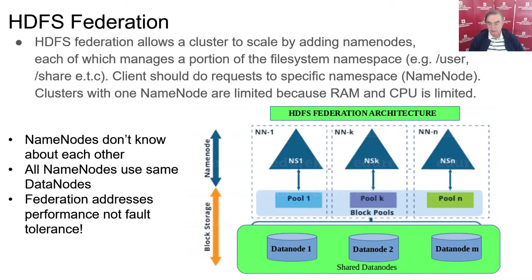If you have multiple clusters, which could even be distributed, you can federate those clusters so that each set of nodes handles only one part of the disk system. For example, slash user one, slash user two, slash user three can be placed on different HDFS units, each with their own name node. The data nodes are shared in common, but the multiple name nodes are independent, differentiated by your assignment of different parts of the disk system to different parts of the federation.